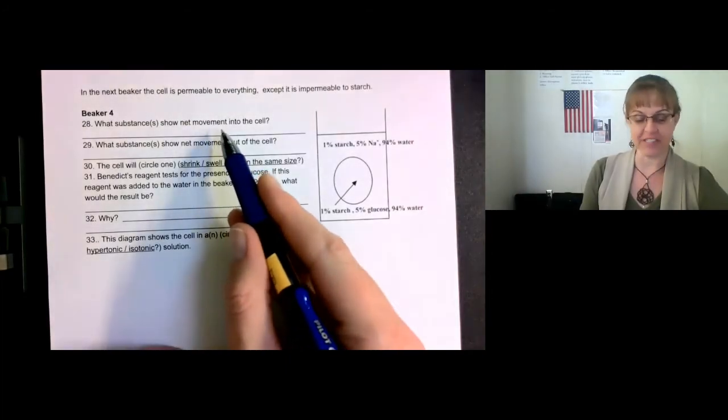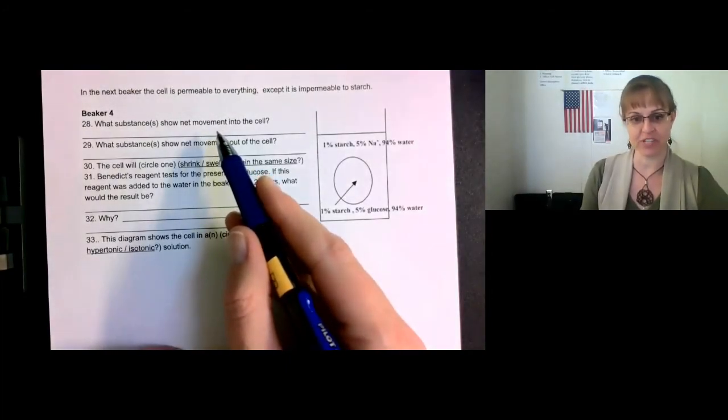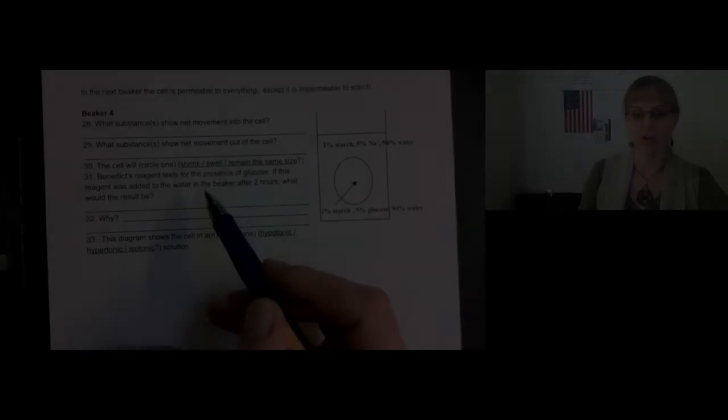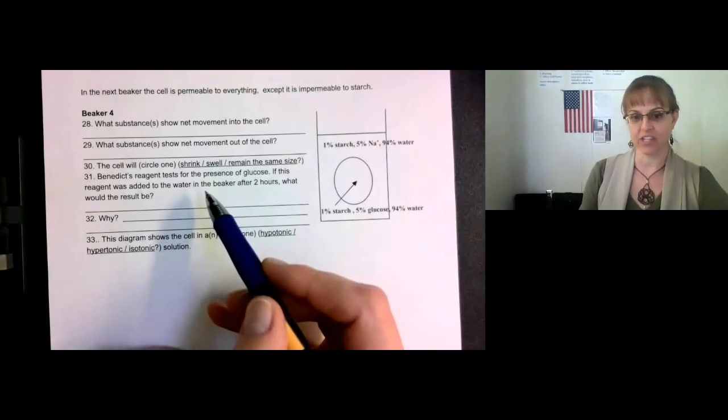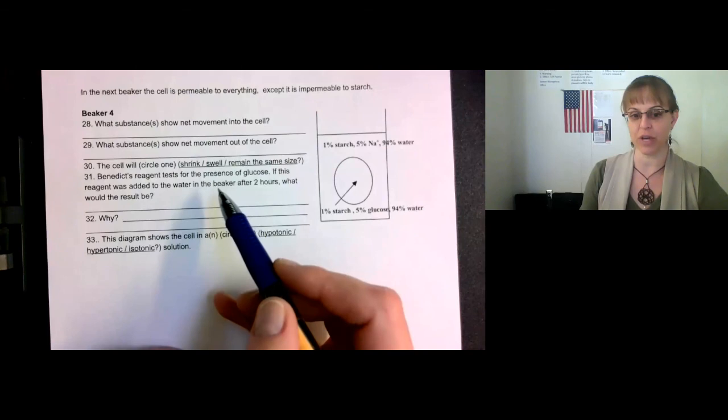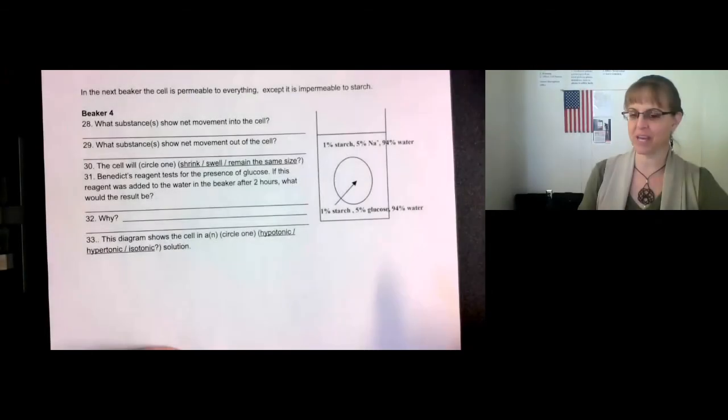Net movement means there is a change in the percentage. Remember, Benedict's reagent turns bright orange in the presence of glucose. And I think you'll be able to finish the rest of the worksheet on your own.